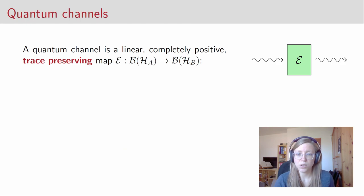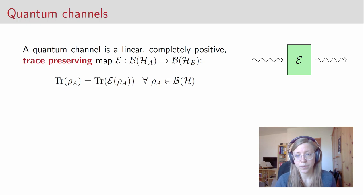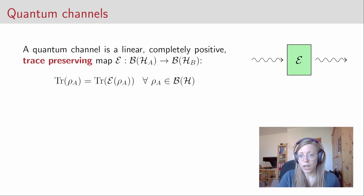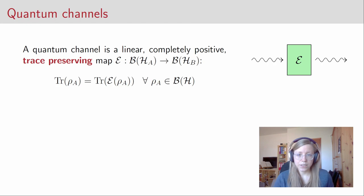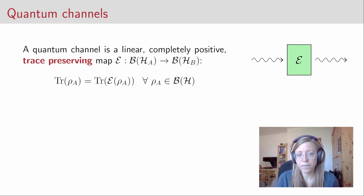The last condition is trace-preserving: the trace of the quantum state that we put into the channel must equal the trace of the quantum state we get out, for all rho_A in the operators of H_A. All these adjectives together ensure that a quantum channel always maps a quantum state to a quantum state. So if we put in a quantum state, we can be sure we get a quantum state in the end.